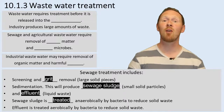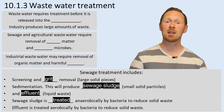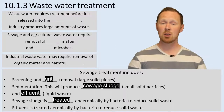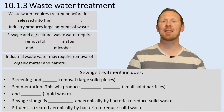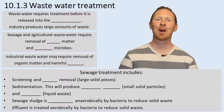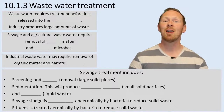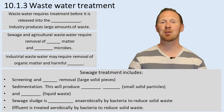Step four is where the effluent is treated. That's treated aerobically by bacteria to reduce solid waste. Consider the role of bacteria — think about what bacteria are and what they do, and realise that they play an important role in the wastewater treatment process in terms of agricultural and industrial waste.